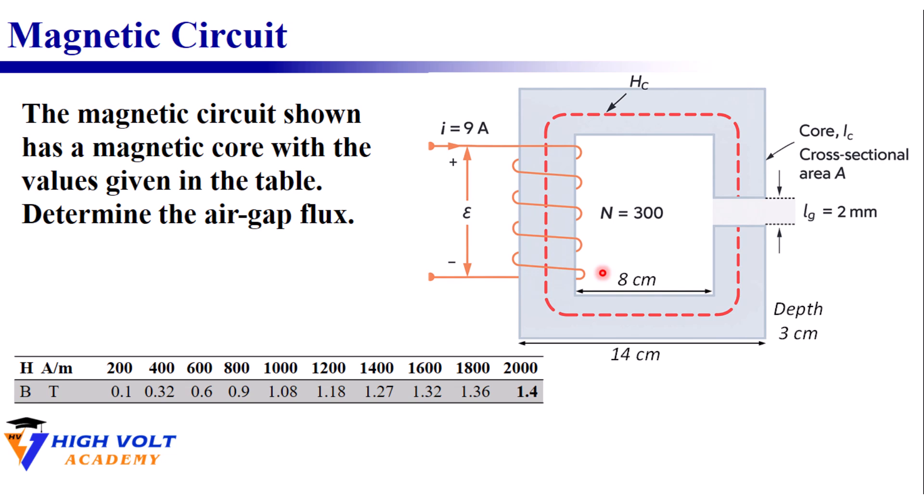The question asks us to determine the air gap flux. The core is square type, the inner dimension is 8 centimeter, the outer dimension is 14 centimeter, and there is an air gap equal to 2 millimeters. A DC current equal to 9 ampere is fed into a winding with 300 turns.